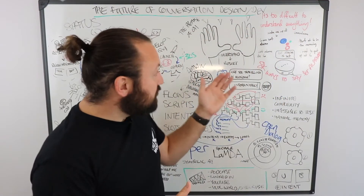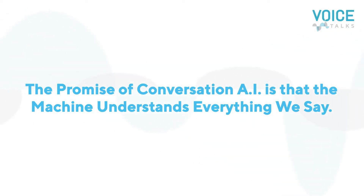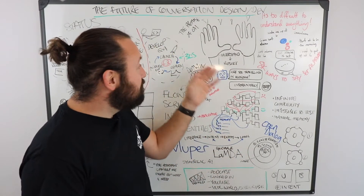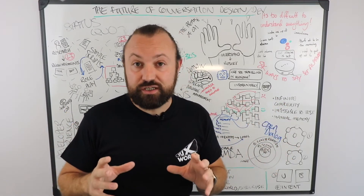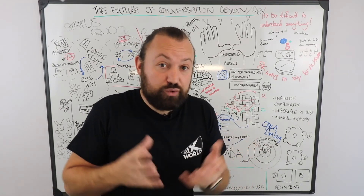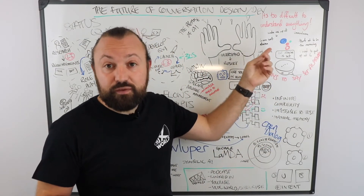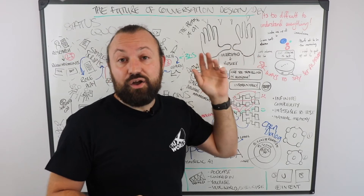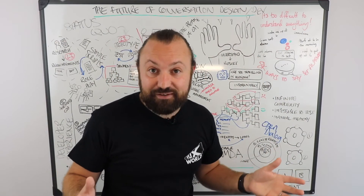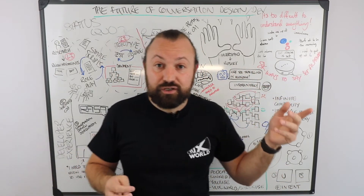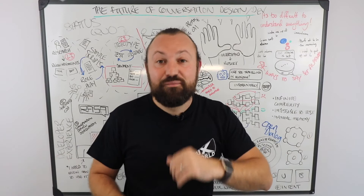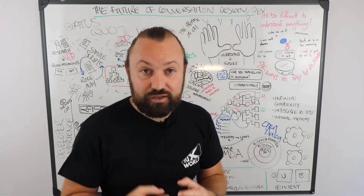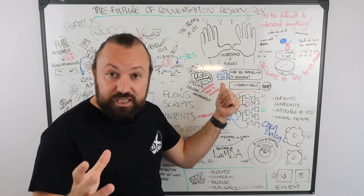The promise and the nirvana for conversational AI is that agents understand everything that we say — they understand our language so that we don't have to understand theirs. But that's very difficult to do. Understanding all the different ways people say things is very challenging. Google did a study around 2018 and found that there are 8,000 different ways that somebody can set an alarm on Google Assistant. If you're building an alarm-based action, you wouldn't have to define all 8,000 ways because Google's trained its models to help with that if you provide enough training data.